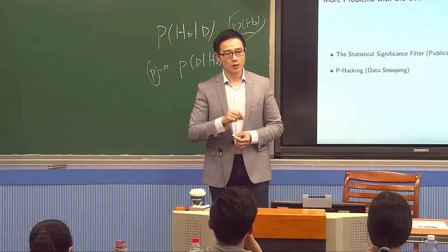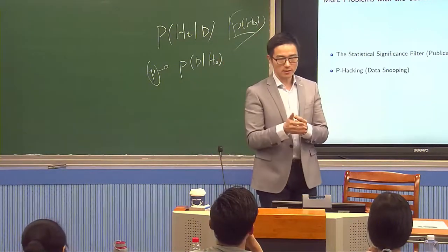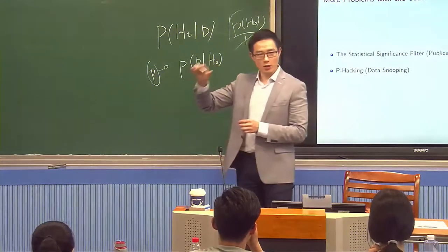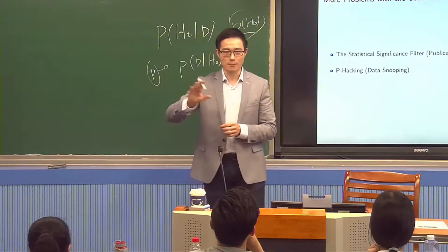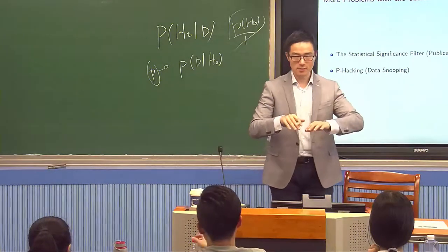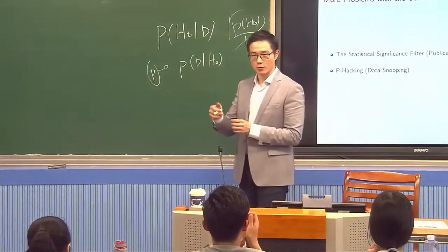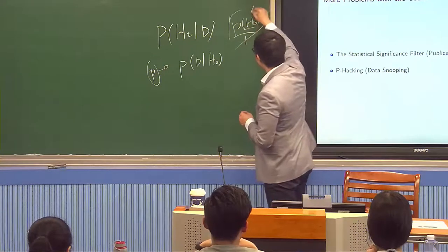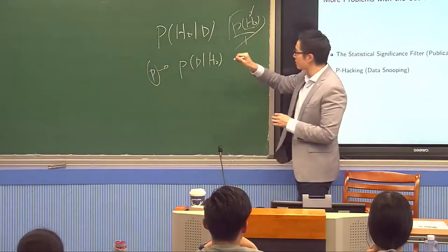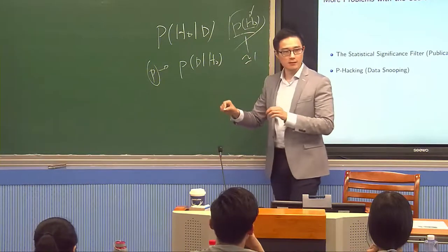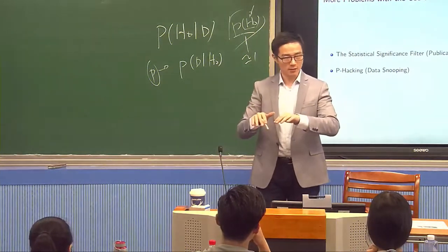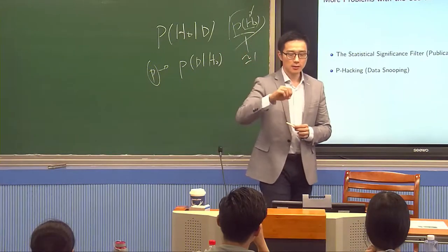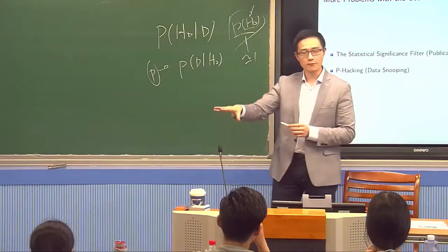The research got published because the p-value was significant. The reason why it's not a good result is because we're unable to incorporate our prior. If you incorporate a prior, your prior should say it's almost impossible — the hypothesis that people can sense the future should have a prior probability almost equal to zero. In other words, the prior belief that the null hypothesis is true should be almost equal to one, which means you should not reject the null based on a single small experiment alone.